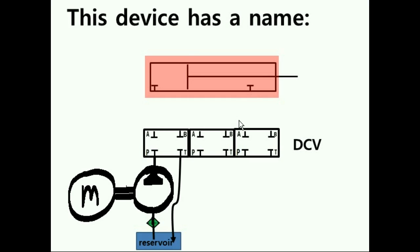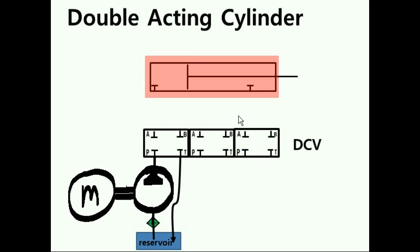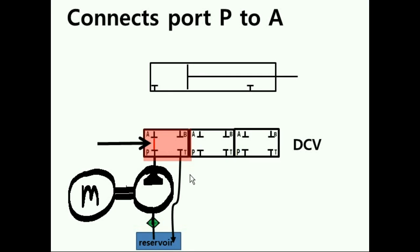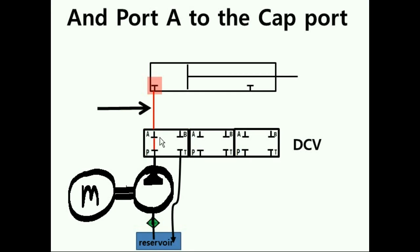Now this device has a name. It's called the double acting cylinder. Now, back we go to position number one. Position number one connects port P to port A, and port A to the cap port.